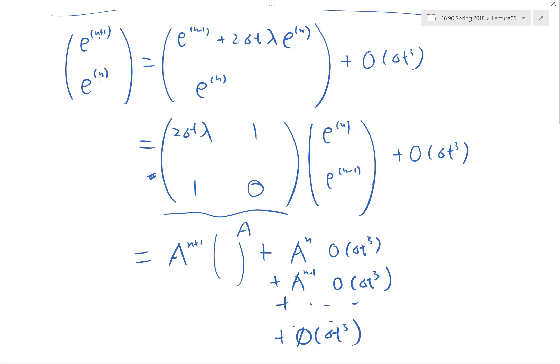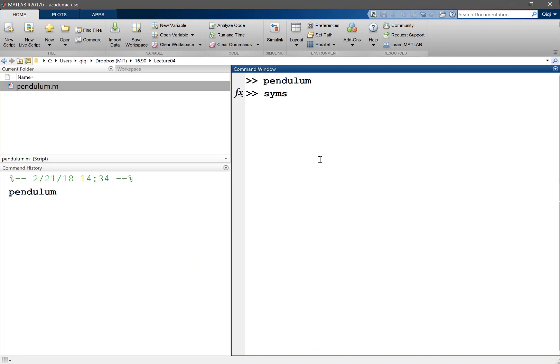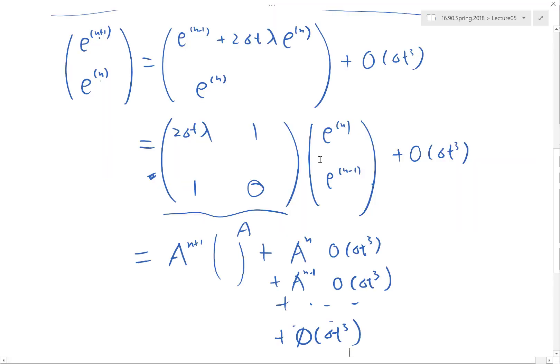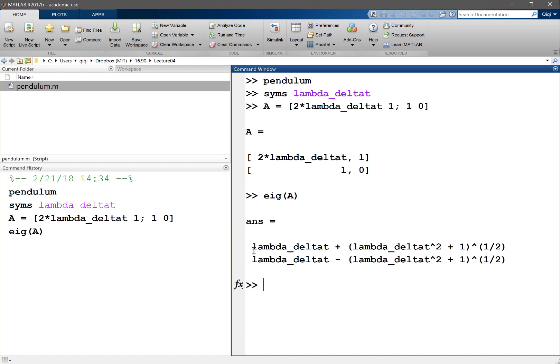And we get eigenvalues of two things. So how do we compute the eigenvalues of this matrix? Well, of course you can do this by hand but I'm just going to do MATLAB. So I can define symbolic variables lambda delta t. Okay, takes some time to load the symbolic toolbox. And now I have matrix A is equal to 2 times lambda delta t, 1, 1, 0. So that's my matrix, it's a symbolic matrix, and I can do eigenvalue analysis to that matrix. What I get is lambda delta t.